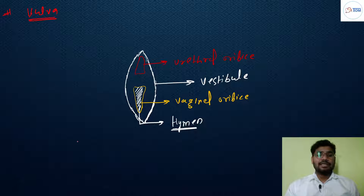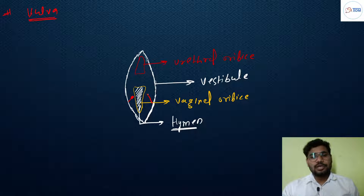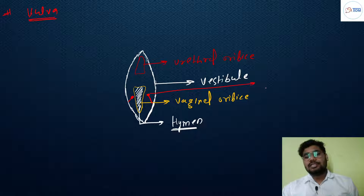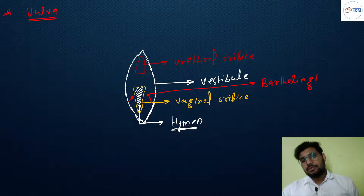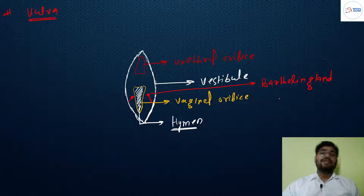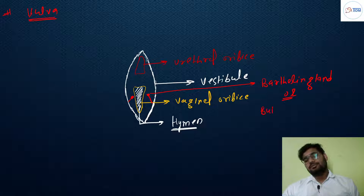Alongside the vagina, there are two glands present. These two glands are called Bartholin glands, also known as bulbo-vestibular glands.